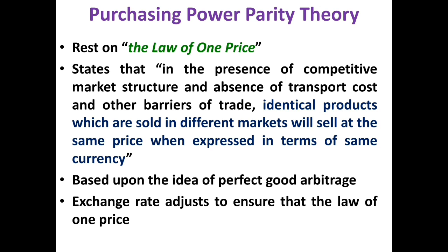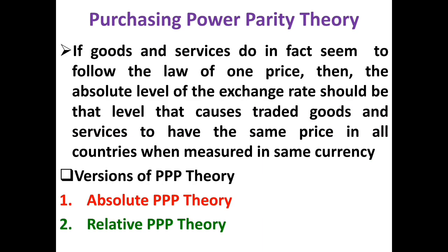The purchasing power parity theory believes that the exchange rate adjusts to ensure the law of one price. If goods and services do in fact follow the principle of the law of one price, then the absolute level of the exchange rate should be that level which causes trade in goods and services to have the same price in all countries.